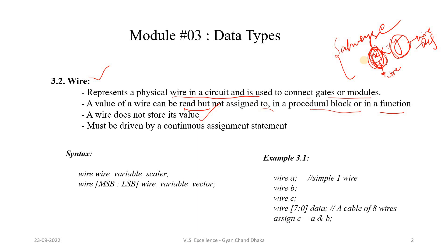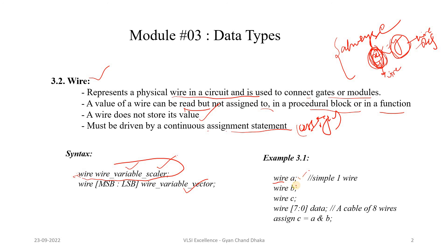A wire data type must be driven by a continuous assignment statement using the assign keyword. Always remember: assignment to a wire data type can only happen using a continuous assignment with the assign keyword. To declare a wire, use the wire keyword followed by the variable name. It can be scalar or a vector — for example, variables a, b, c of type wire, and an 8-bit vector data also of type wire.